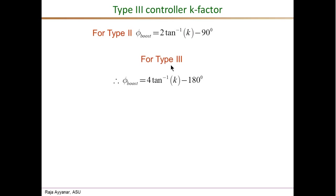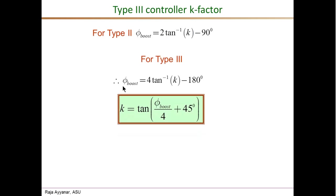For the Type 3 controller, phi_boost equals 4 arc tan(K) minus 180 degrees. This gives the final expression for K in a Type 3 controller: K equals tan of (phi_boost/4 + 45 degrees). Other than this specific expression for K, many of the equations and steps are identical to those used for the Type 2 controller.